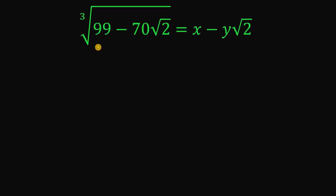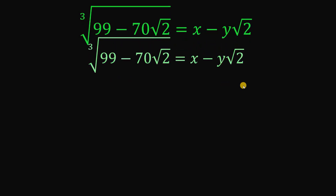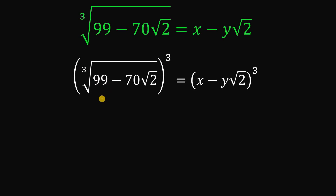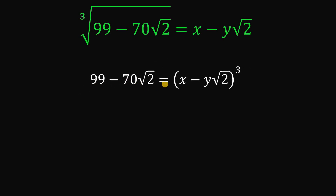Our goal in this question is to simplify, or to rewrite, the cube root of (99 minus 70 times square root of 2) in the form of x minus y times square root of 2. What we're going to do is take this equation and cube both sides — the reason is to eliminate the cube root. The left-hand side is then just 99 minus 70 times square root of 2.